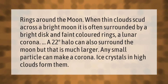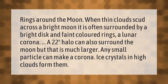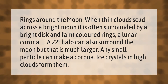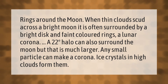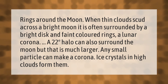Rings around the moon: when thin clouds scud across a bright moon, it is often surrounded by a bright disc and faint colored rings — a lunar corona. A 22-degree halo can also surround the moon, but that is much larger. Any small particle can make a corona; ice crystals and high clouds form them.